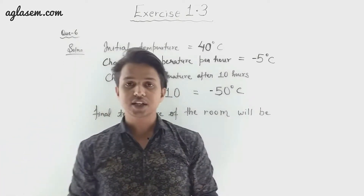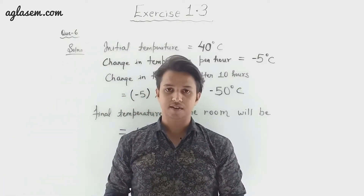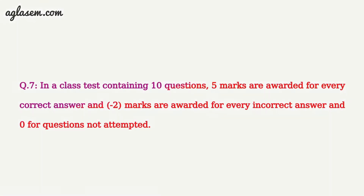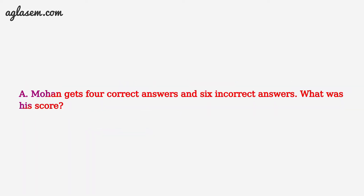Moving to Question Number 7: in a class test containing 10 questions, 5 marks are awarded for every correct answer, minus 2 marks for every incorrect answer, and zero for questions not attempted. Part one: Mohan gets 4 correct and 6 incorrect answers. What will be Mohan's score?